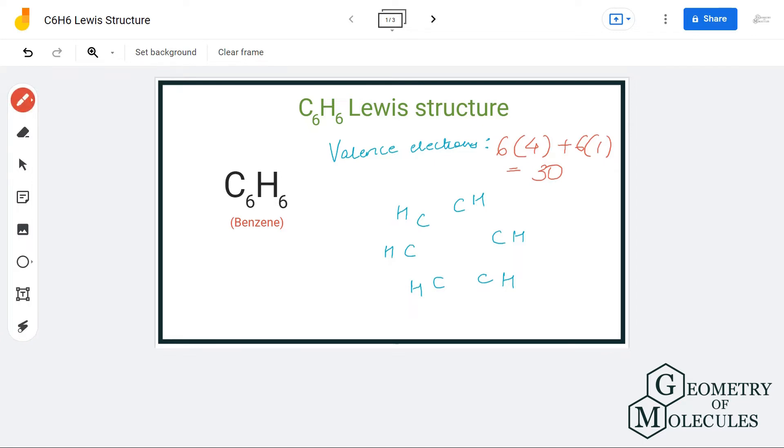Now to show a bond between carbon and carbon atoms and carbon and hydrogen atoms, place a pair of electrons, or you can also draw a line. I'm going to draw a line over here because it is easier that way.